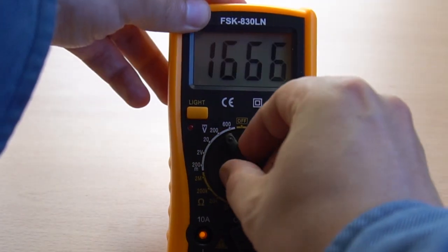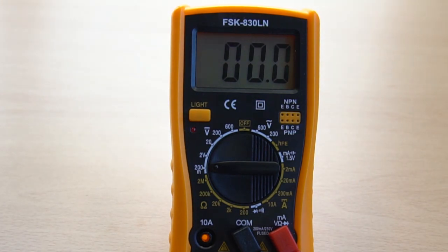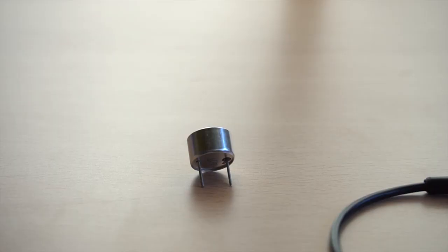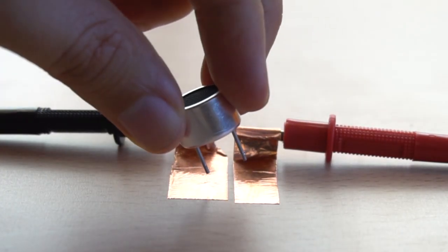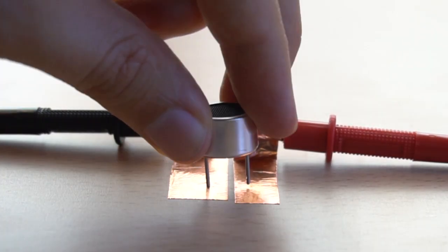Set the multimeter to continuous voltage at maximum sensitivity. Try not touching the legs when you pick up the piezo. Connect one leg and while you look at the multimeter, connect the other.